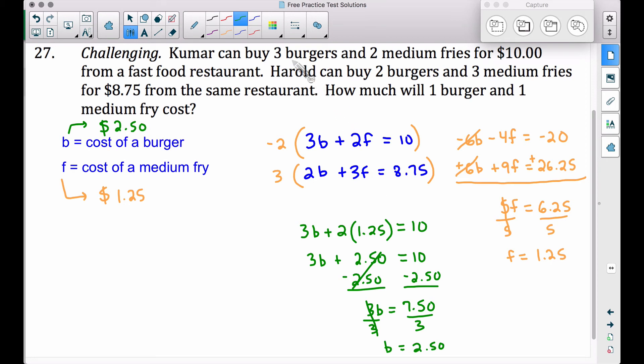Now we can check our work, I encourage you to do this. If you take 3 hamburgers times the cost of a hamburger, well 3 times $2.50 is $7.50 plus 2 times $1.25, because that's 2 medium fries. 2 medium fries at $1.25 each, that's going to be $2.50, $7.50 plus $2.50 is 10 bucks. Good. Now let's make sure it works for this one down here. Two burgers. A burger is $2.50. Two burgers, 2 times $2.50, that's 5 bucks. And then we have 3 medium fries. A medium fry is $1.25. So 3 medium fries at $1.25 each, that's going to be $3.75. $5 for the burgers, $3.75 for the fries, that does total $8.75. So we do have the correct two numbers here.